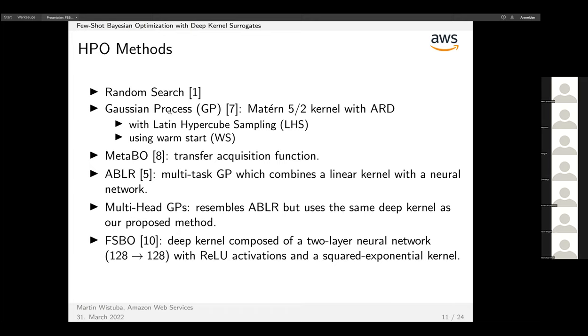The hyperparameter optimization methods we used as baselines were: random search, a Gaussian process with the Matérn kernel in two variants—one with Latin hypercube sampling initialization and another with the same warm starting we use, then MetaBO as a baseline, which was very recently published on the same conference a year before.